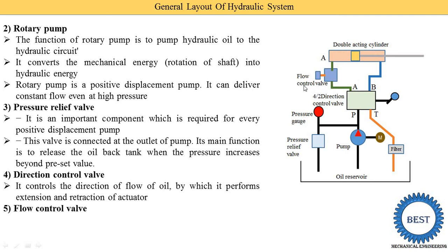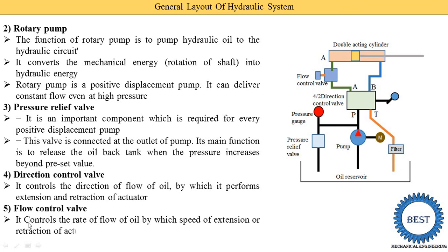The next component is the flow control valve. From its name, we understand it controls the flow — it controls the quantity of oil supplied to the cylinder. Sometimes the oil supplied to the cylinder is required at 2 liters per minute, sometimes 2.5 liters, sometimes 3, 4, or 5 liters. This is controlled by using the flow control valve depending on the pressure or force required. It controls the rate of flow of oil, by which the speed of extension or retraction of the actuator is controlled.